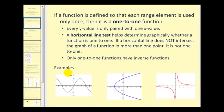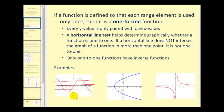For example, on this first graph, it passes the vertical line test, so it's a function. However, it fails the horizontal line test because these horizontal lines intersect the graph in more than one point. So this function is not one-to-one.